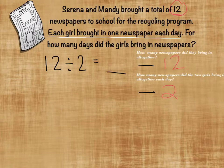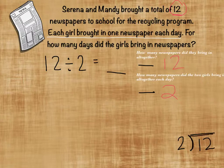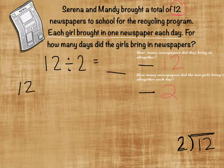Another way to write that, by the way, is 12 divided by 2 using the long division format — you might see it that way sometime. But we're going to use repeated subtraction. We take our 12 and we're going to subtract 2 until we get to 0, until we've used all the newspapers.